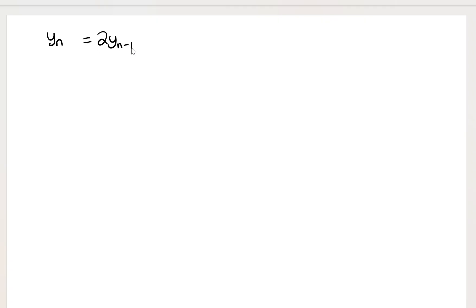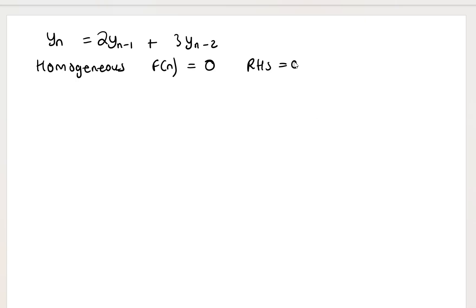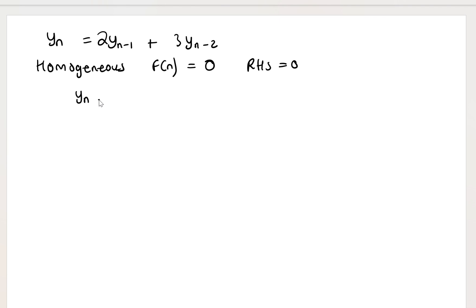The first example is y sub n equals 2y sub n-minus-1 plus 3y sub n-minus-2. Remember what we said about homogeneous ODEs — it depends on whether the right-hand side is equal to zero. All terms here are dependent variables, so I can group them: y sub n minus 2y sub n-minus-1 minus 3y sub n-minus-2 equals zero.